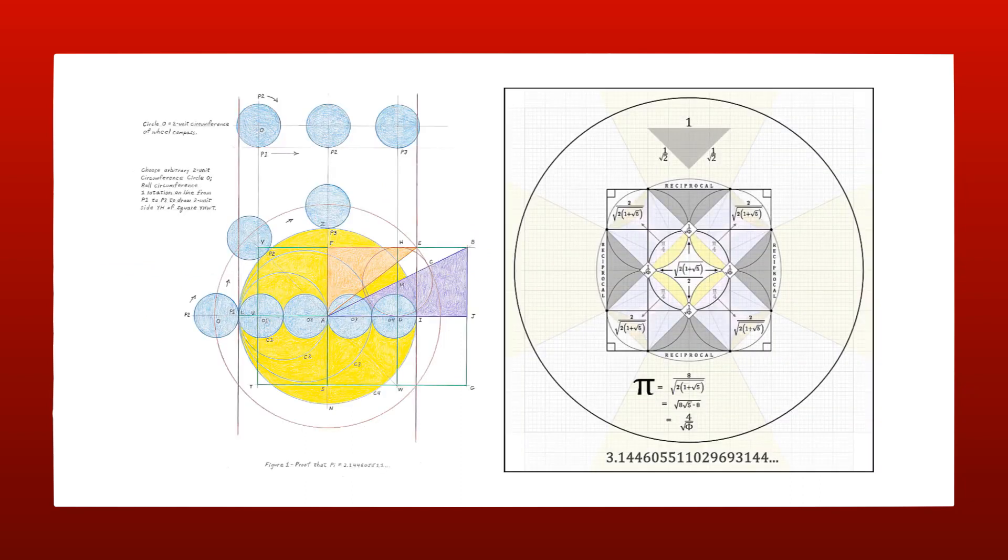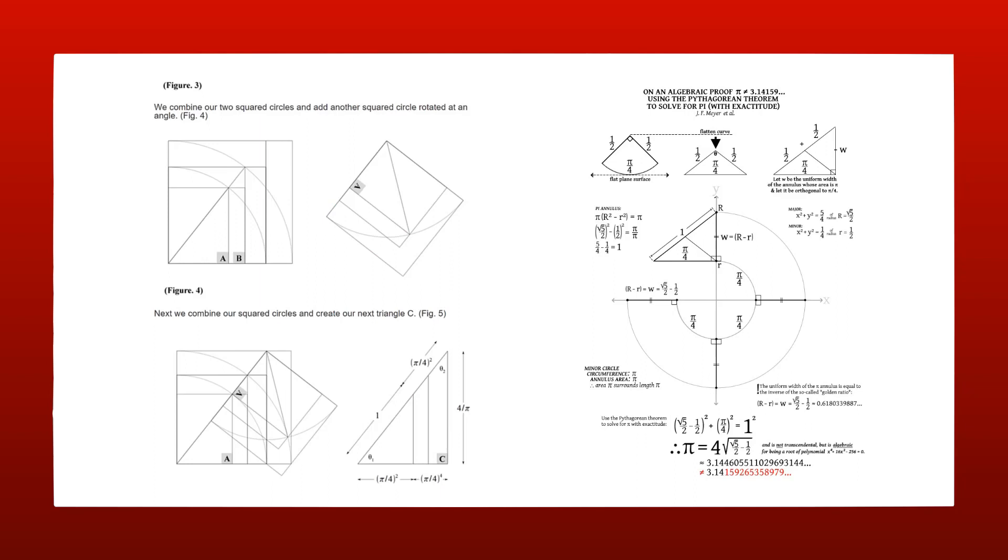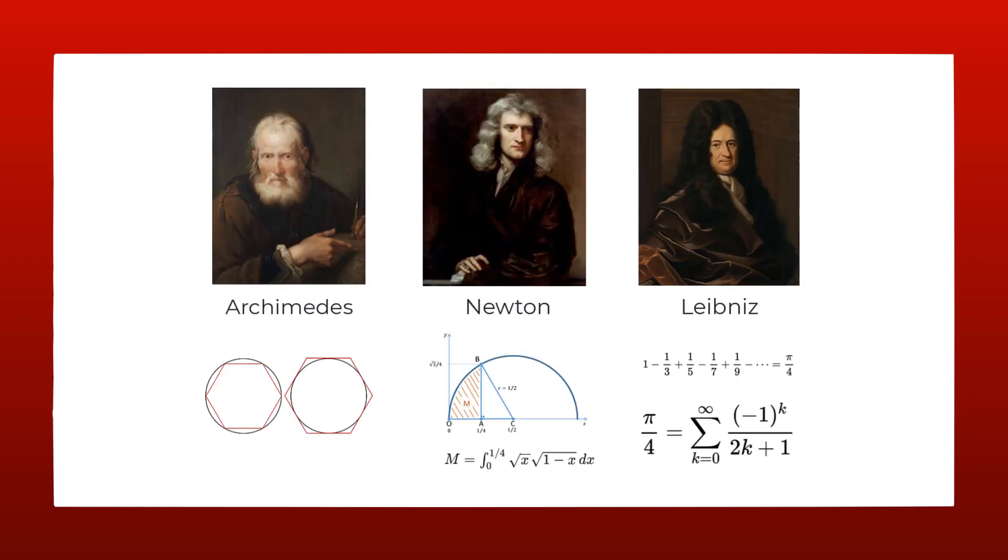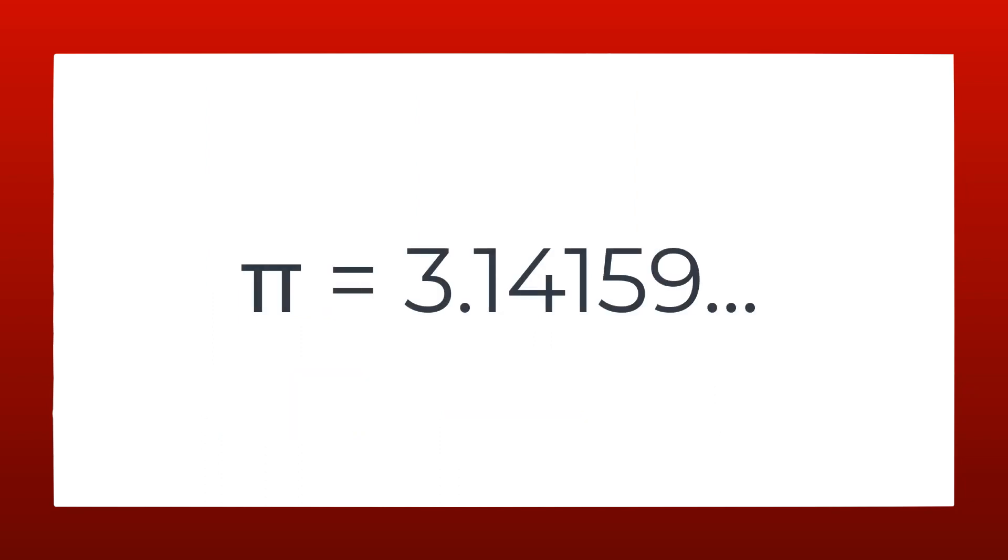This new value is revealed in elegant geometric constructions. Archimedes, Newton, Leibniz, and all the others who used mathematics to reveal my value all got it wrong because of their errors of approximation. Anyone who insists that I'm 3.14159 is in ignorance of the truth and standing in the way of progress.